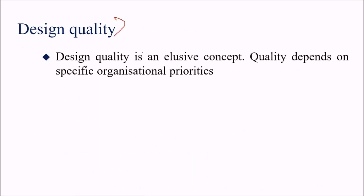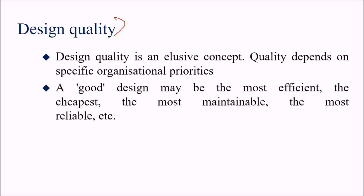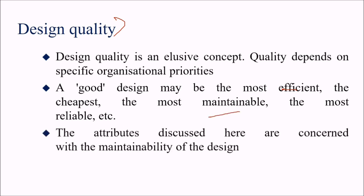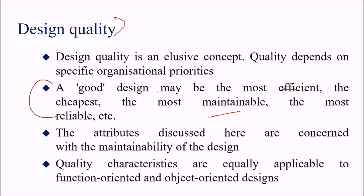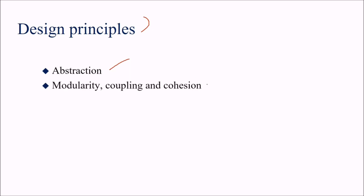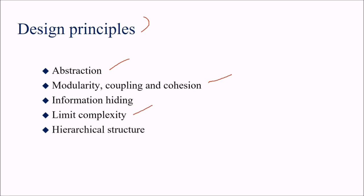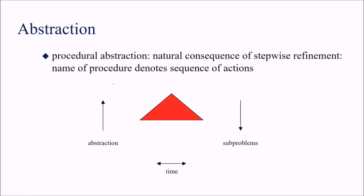Design quality is a concept that depends on specific organizational priorities. A good design may be most efficient, cheapest, most maintainable, or most reliable — attributes concerned with maintainability. Quality characteristics apply equally to function-oriented and object-oriented designs. Key design principles include: abstraction, modularity, coupling and cohesion, information hiding, limiting complexity, hierarchical structure, understandability, and adaptability.